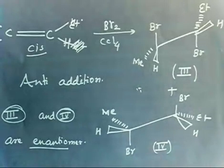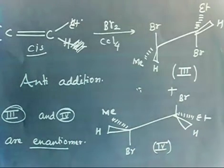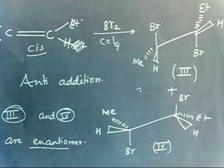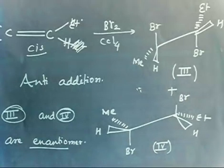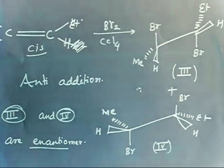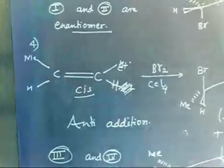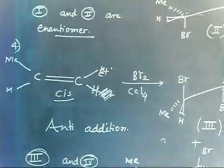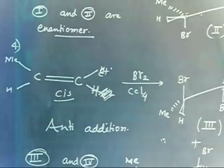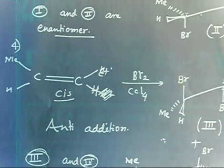This is a quite easy problem. This problem is related to addition of a symmetrical reagent on an alkene. Bromine is a symmetrical reagent — you are adding Br⁺ and Br⁻. We have seen that in both cases — whether addition is syn or anti — if the alkene is not symmetrical (here we have Et on one side and Me on the other side), the product will never be meso; it will always be a racemic mixture. So if the alkene is not symmetrical, the product will never be meso — it will always be a racemic mixture.